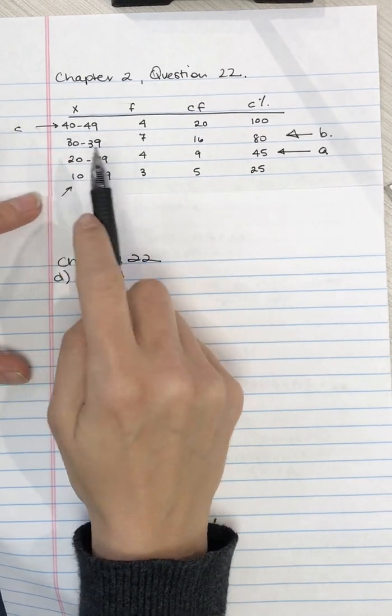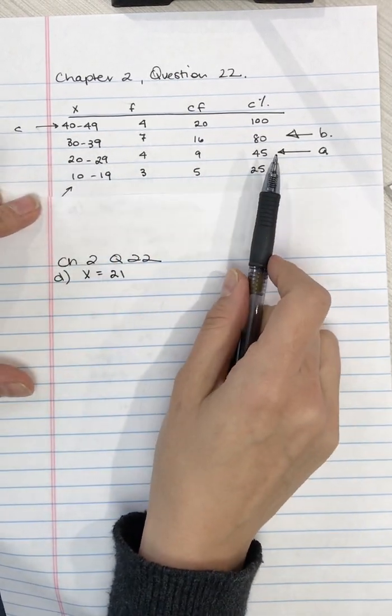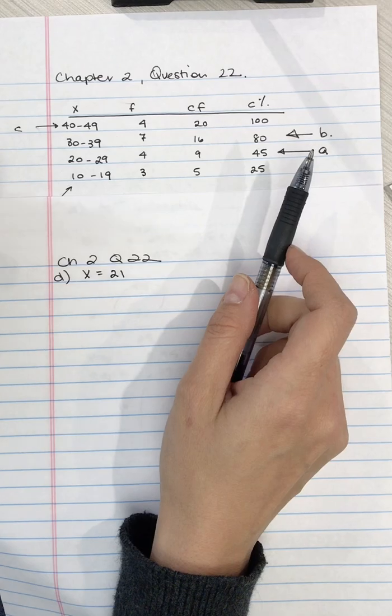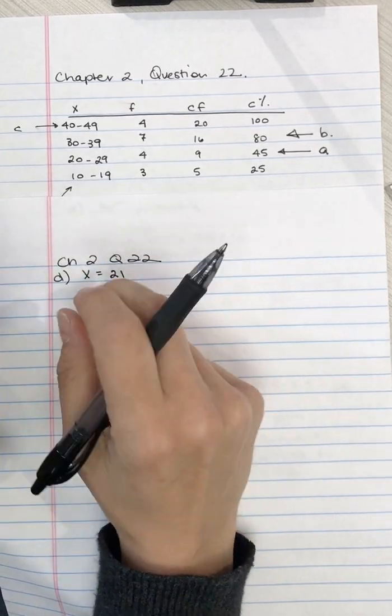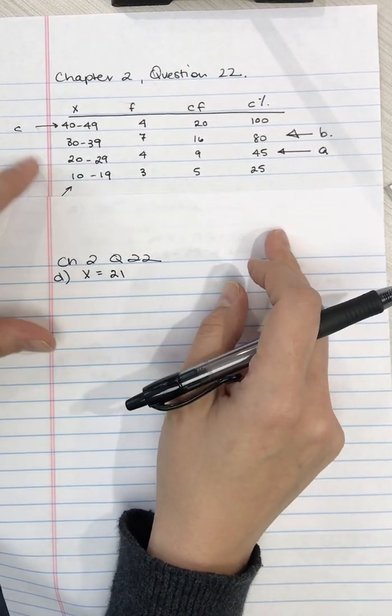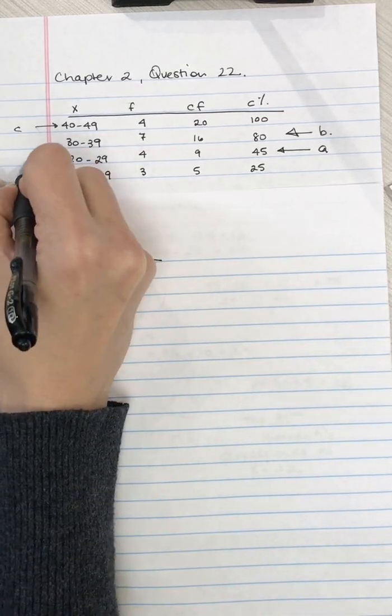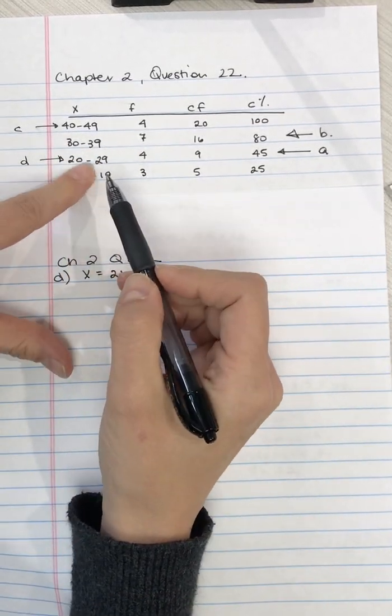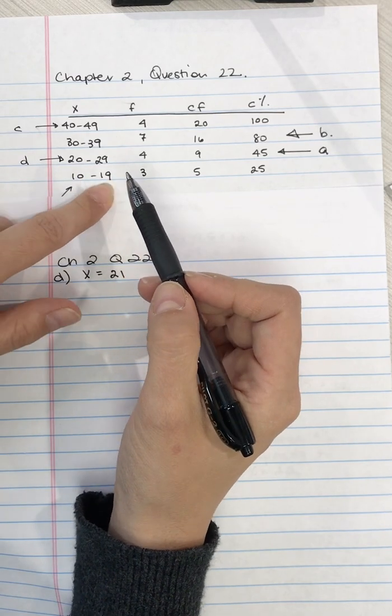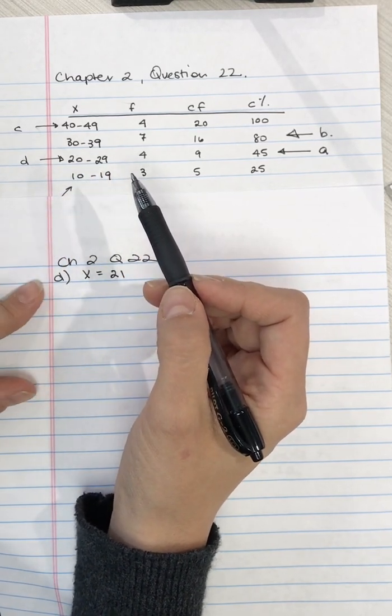We need to find the percentile rank for x equals 21. So we have the x value, we need to find the cumulative percentage value. Our first step is to figure out which row, which interval, do we need to look at. So we need to find where would 21 go, and it would go here because it falls between 19.5 and 29.5.